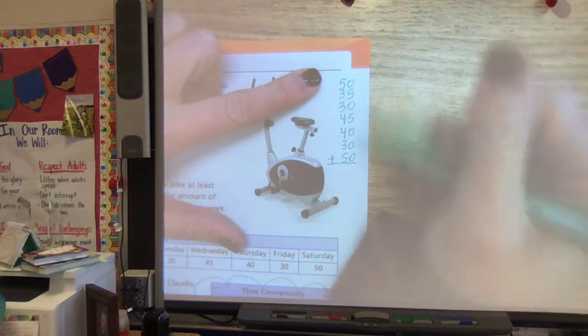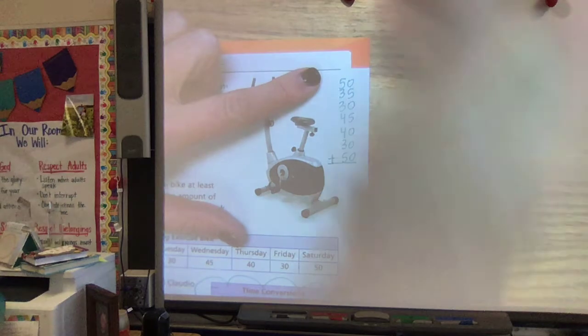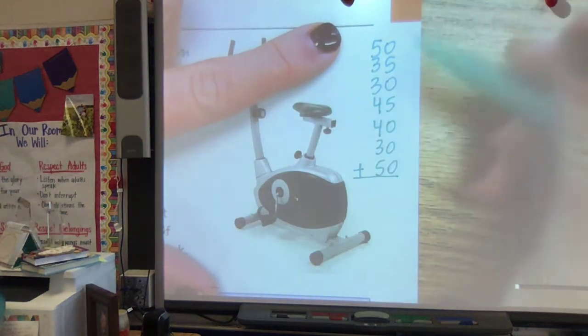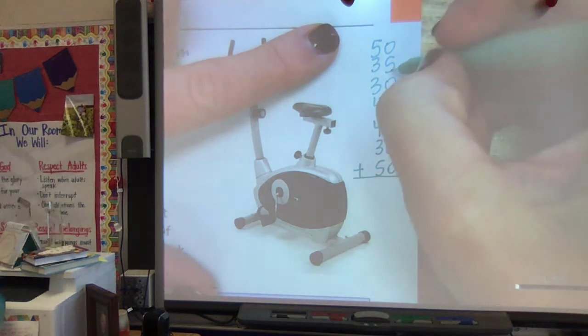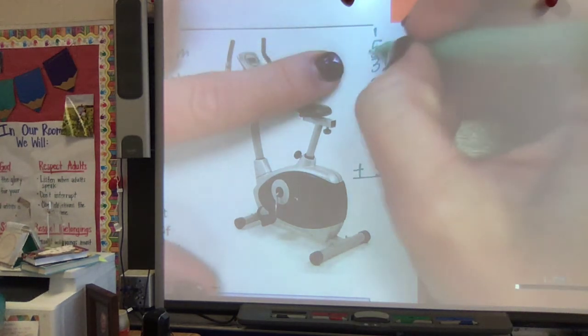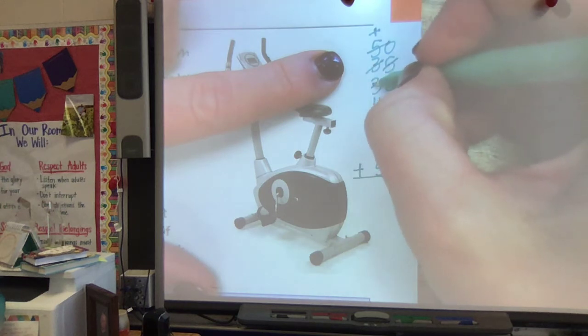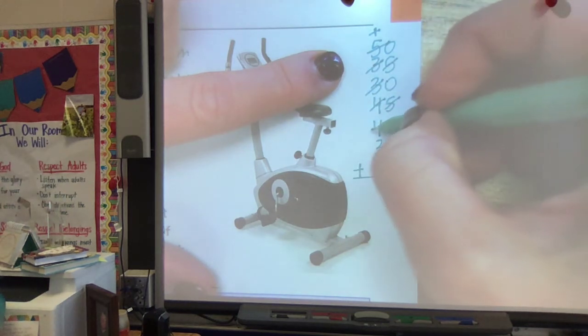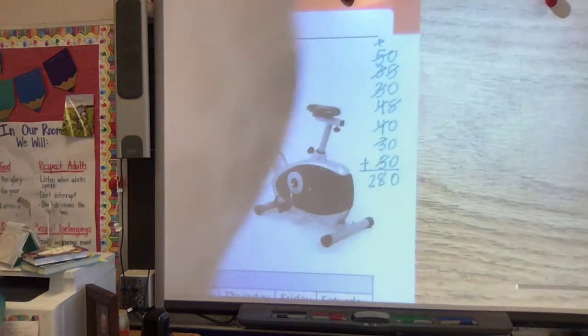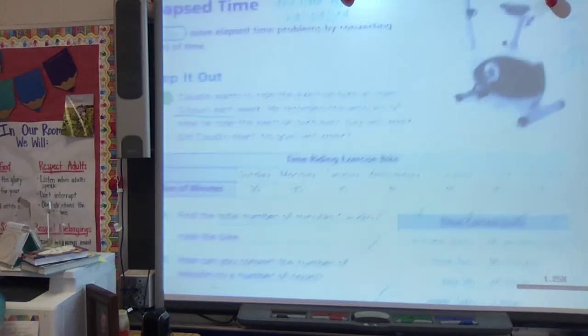And normally I wouldn't recommend adding seven numbers at once, but since these numbers are multiples of five, this won't be too bad. So I know that he rode a total of 280 minutes.